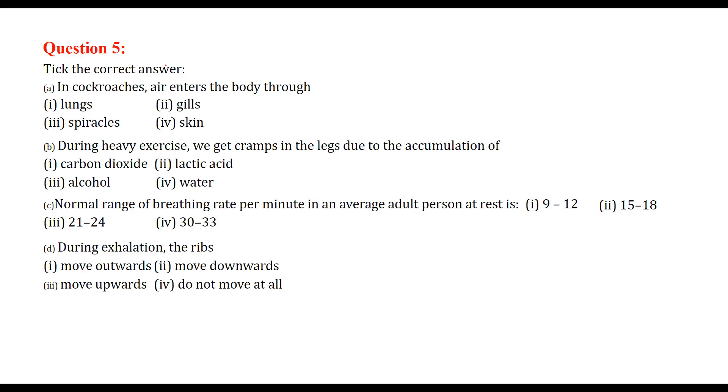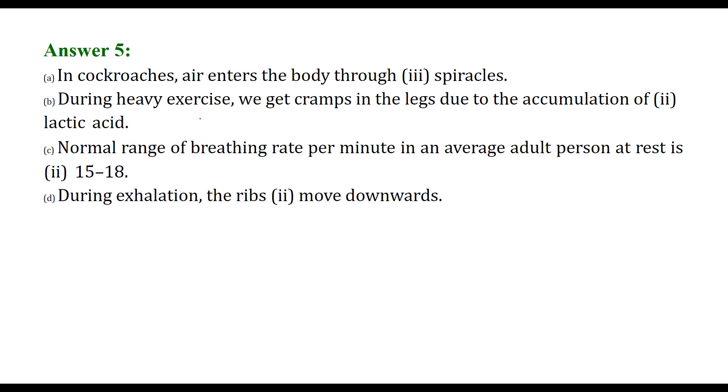Take the correct answer. In cockroaches, air enters the body through spiracles. During heavy exercise, we get cramps in the leg due to the accumulation of lactic acid. Normal range of breathing per minute in average adult person at rest is 15 to 18. During exhalation, the ribs move downward. So these are the answers: spiracles, lactic acid, 15 to 18, and move downwards.